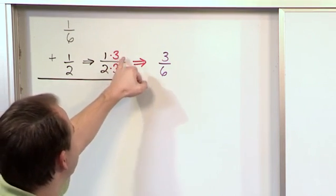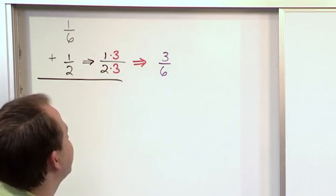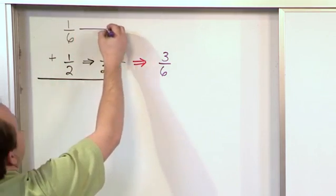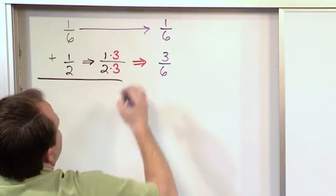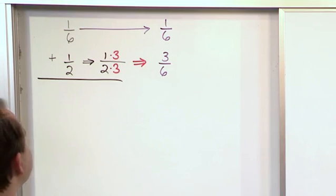Alright, so we do our fraction manipulation trick to get three-sixths. Now we're trying to add to it the fraction that we haven't really changed from before, which is one-sixth. So how do we do that?